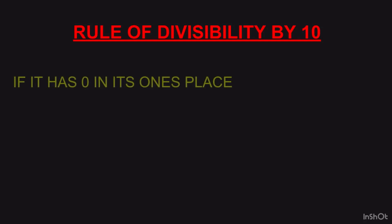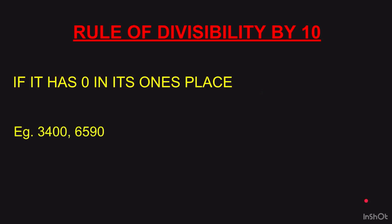Rule of divisibility by 10: similar to the rule for 5, but only 0 is acceptable in the 1's place (not 5). Examples: 3400 has 0 in the 1's place, so it is divisible by 10. 6590 also has 0 at the end, so it is divisible by 10. This brings us to the end of the divisibility rules. Do revise them — they are very important and you need to have them on your fingertips. Only then will you be able to check for factors.